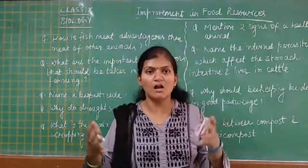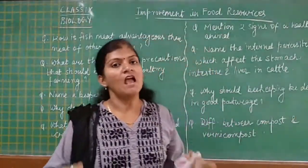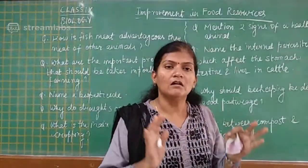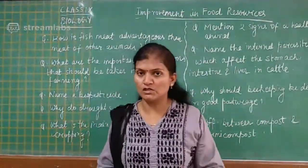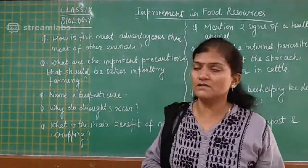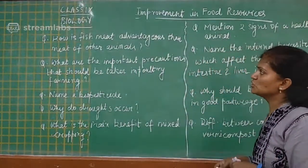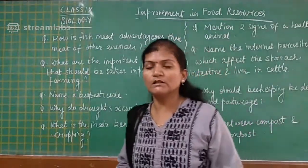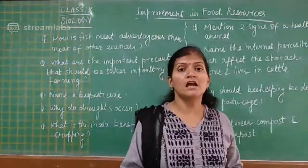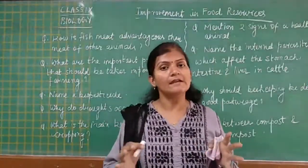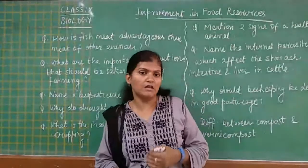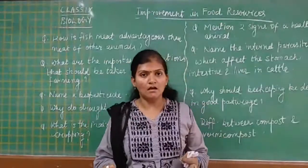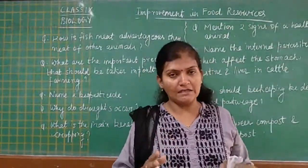Please convey this message from our school — you have to say 'Present' and sit through the entire video to get proper knowledge. The first question is: how is fish meat advantageous compared to the meat of other animals? Fish meat has a higher amount of protein and less fat, therefore it can be easily digested. It is also a good source of Vitamin A and K.